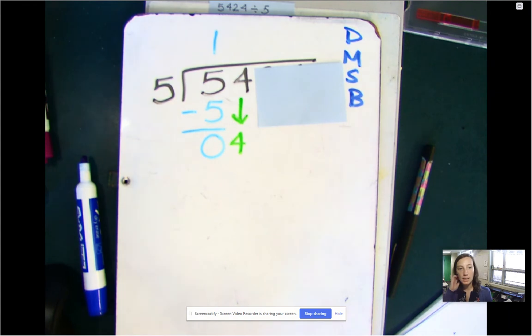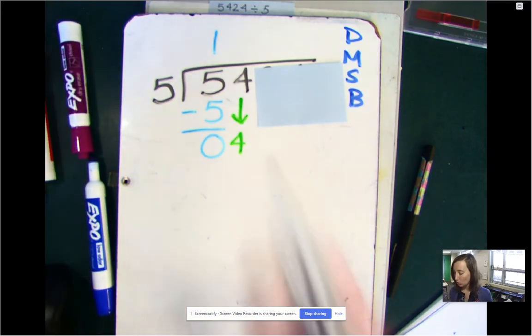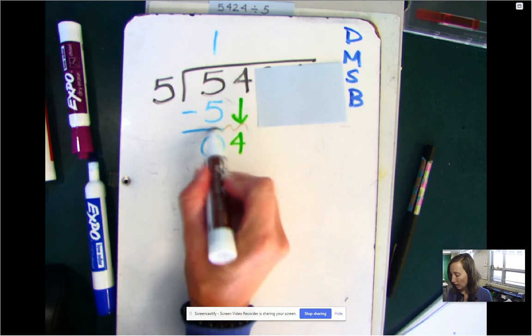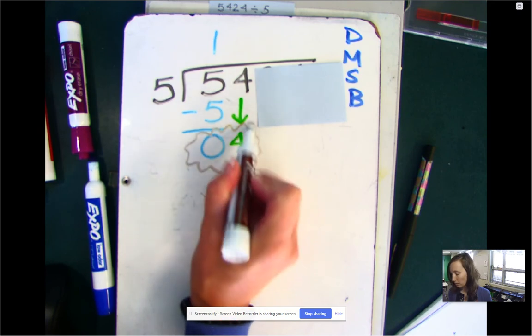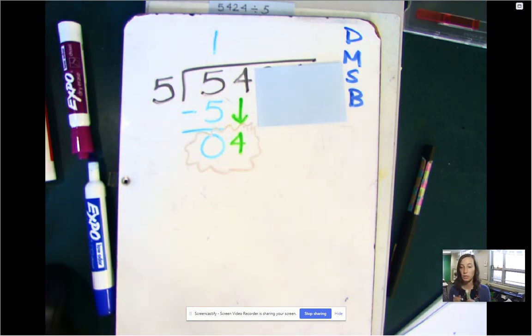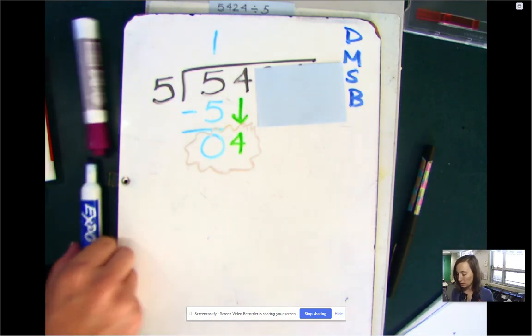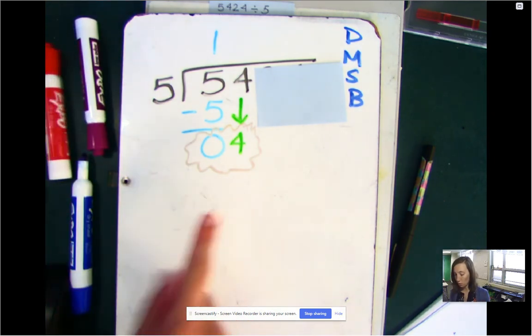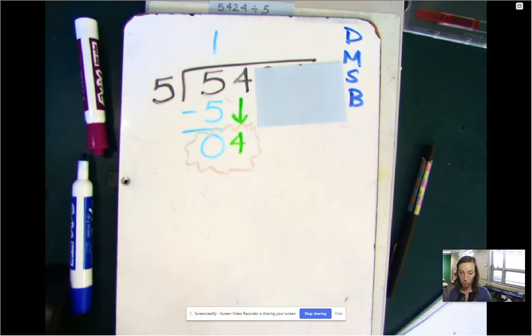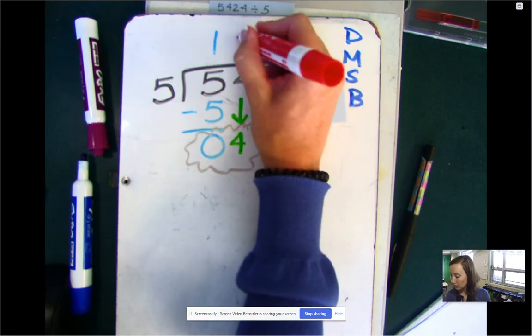So one of the biggest mistakes that kids make when they do this is they can't remember what number they're supposed to be dividing into. That's one of the common mistakes. You're always, whatever you got as the answer to your subtraction problem and the number you're bringing down, that's always your new target number. So now I'm going to ask myself, how many times does five go into four? Well, five doesn't fit into four.